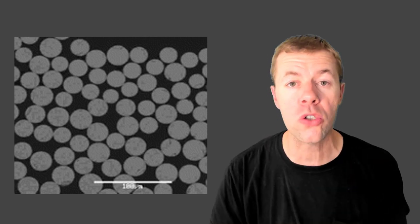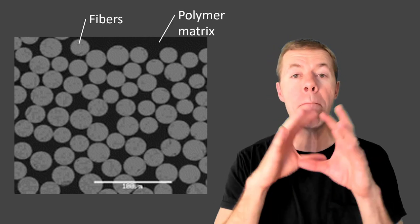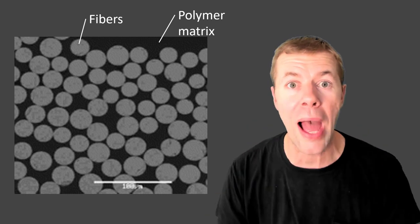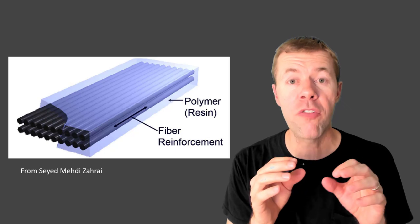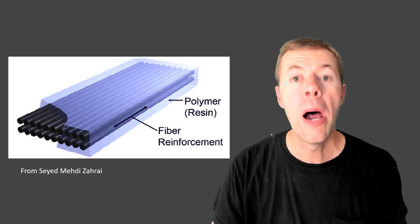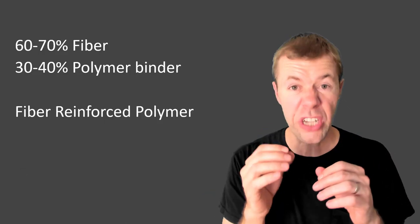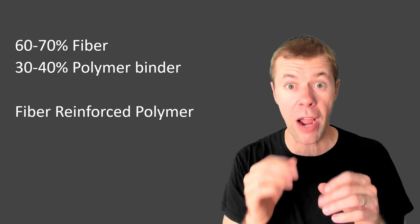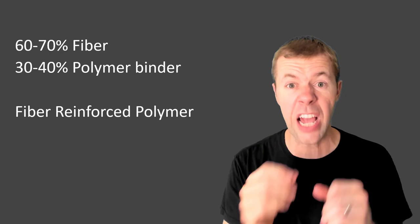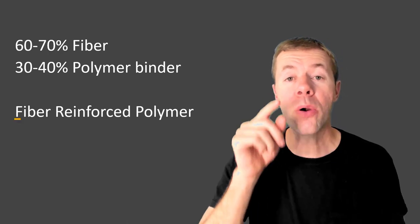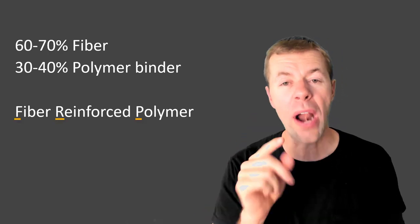Now these little bitty circles, these are fibers that are embedded in a polymer or plastic matrix. The fibers go in the long dimension of the bar and they're surrounded by these polymers. In the cross-section about 65% of it is fiber and the rest of it is this polymer or glue that just helps hold it together. And this is fiber reinforced polymer or FRP.